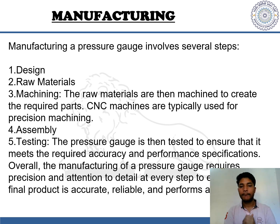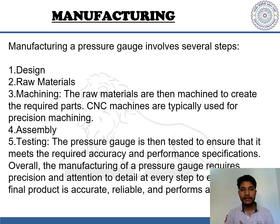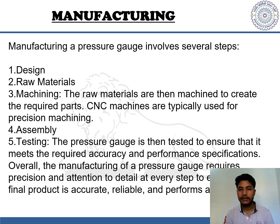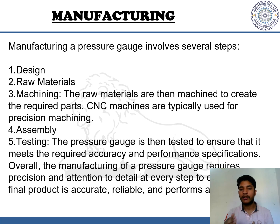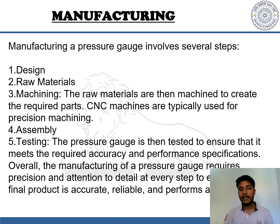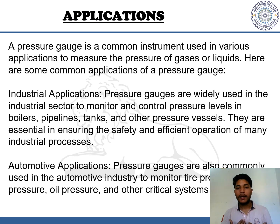Now let's look at manufacturing. Manufacturing a pressure gauge involves several steps: designing, accumulating the raw materials, machining the raw materials to create the required parts — CNC machines are typically used for precision machining — assembling the parts, and finally testing the pressure gauges to ensure they meet the required accuracy and performance specifications. Overall, manufacturing requires precision and attention to detail at every step.